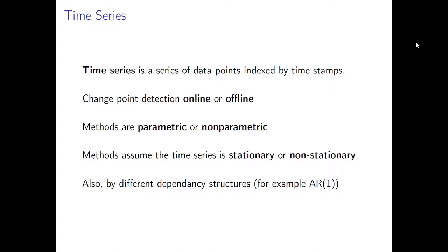First of all, let's cover what is a time series. In simple terms, it's a sequence of data which is indexed by timestamps. Change point detection for time series can be classified by two different properties. We can divide the methods into two classes: online and offline methods. Online methods look at the data sequentially and can detect change points in real time, while offline methods look at just a fixed data set.